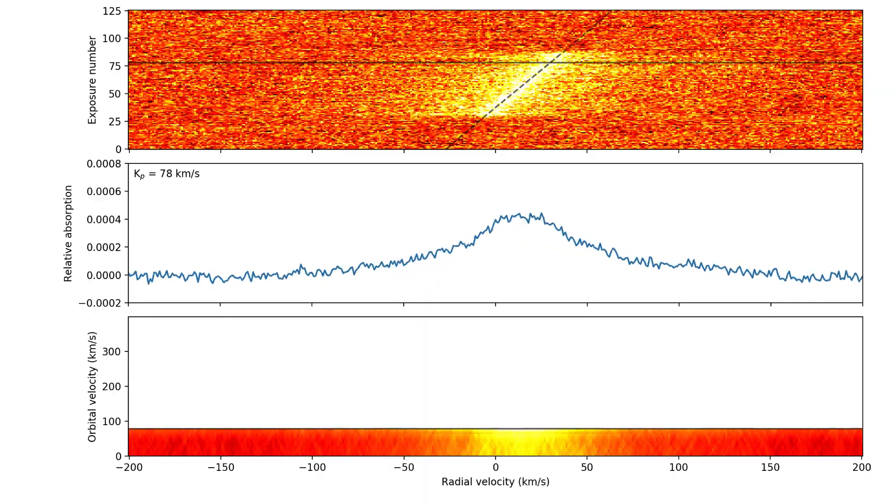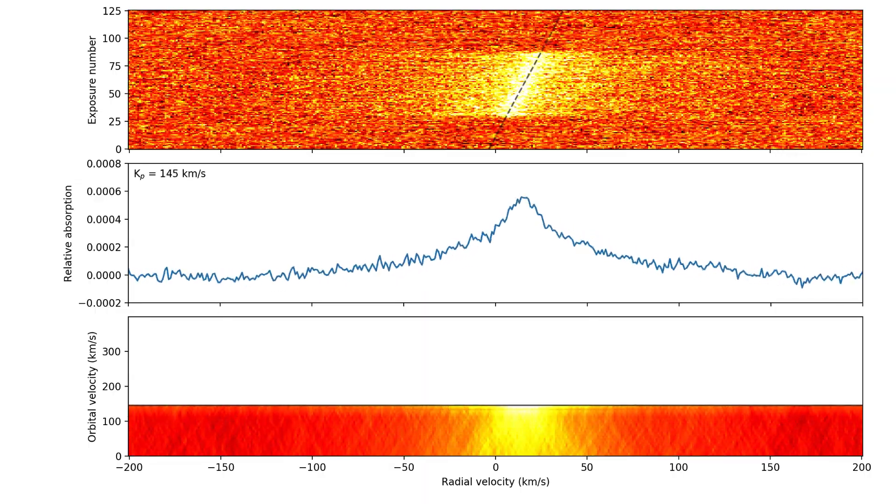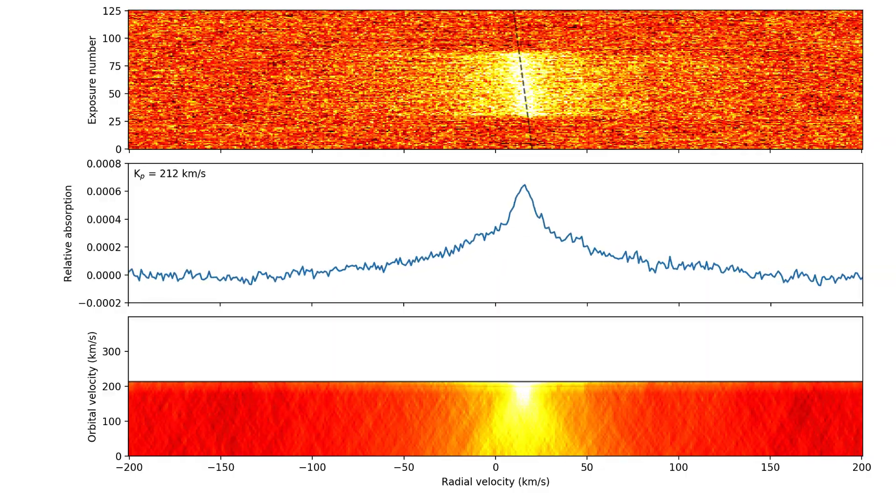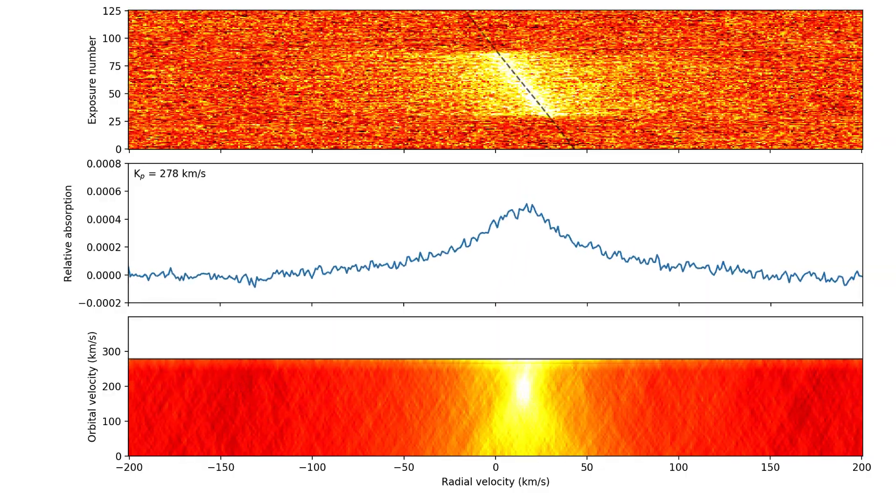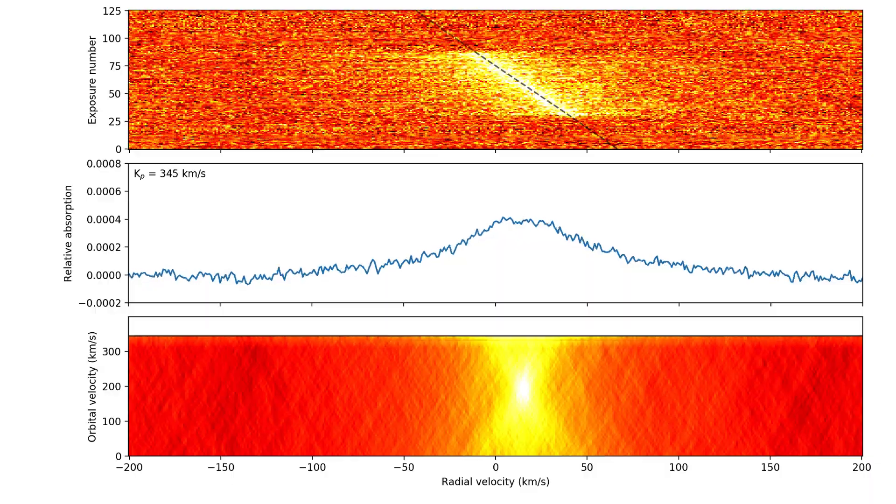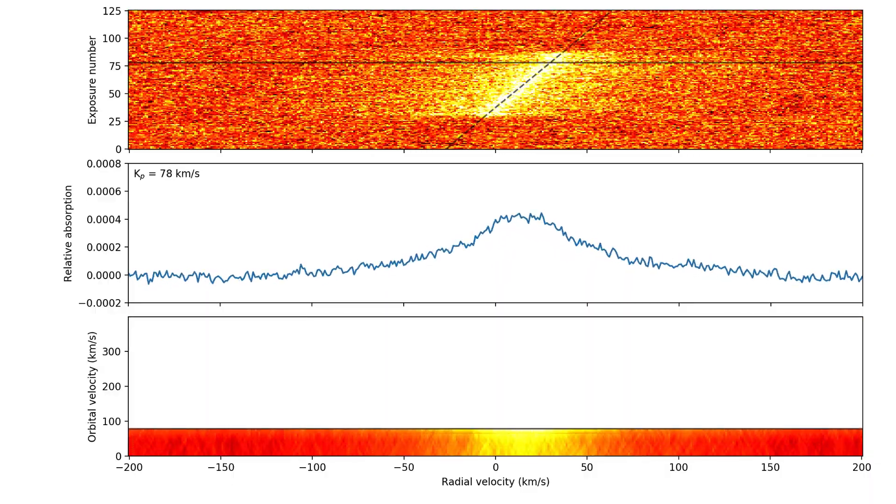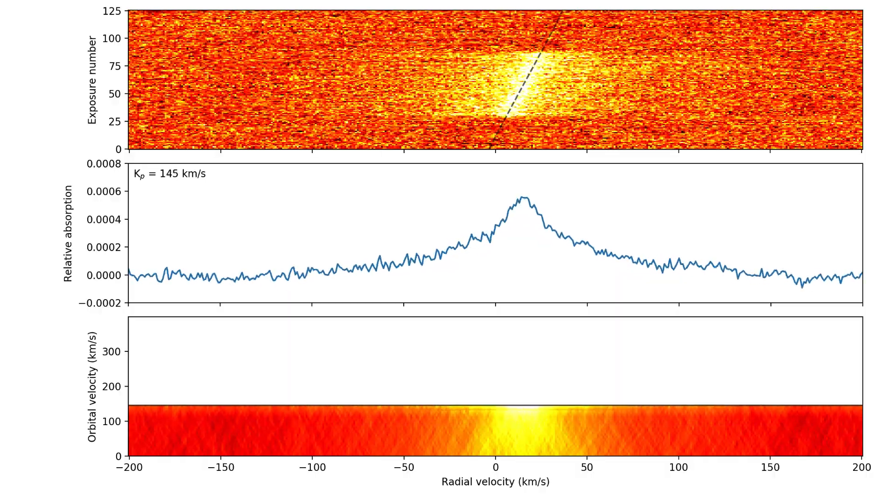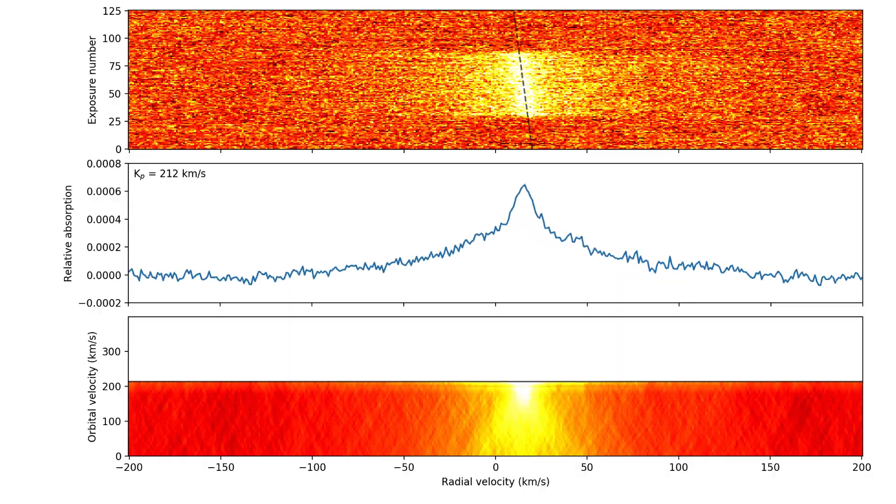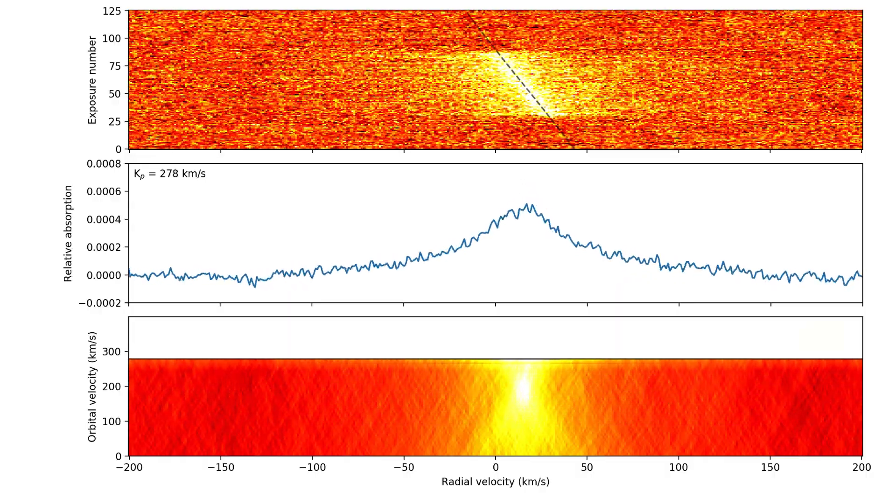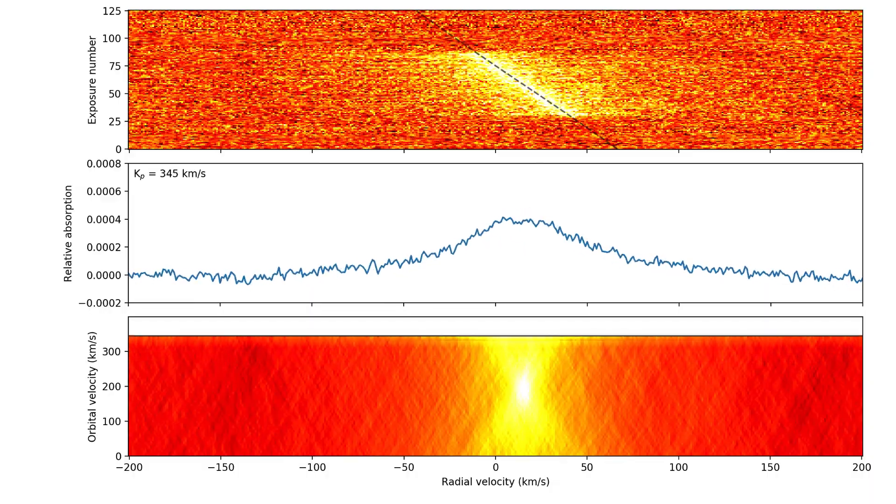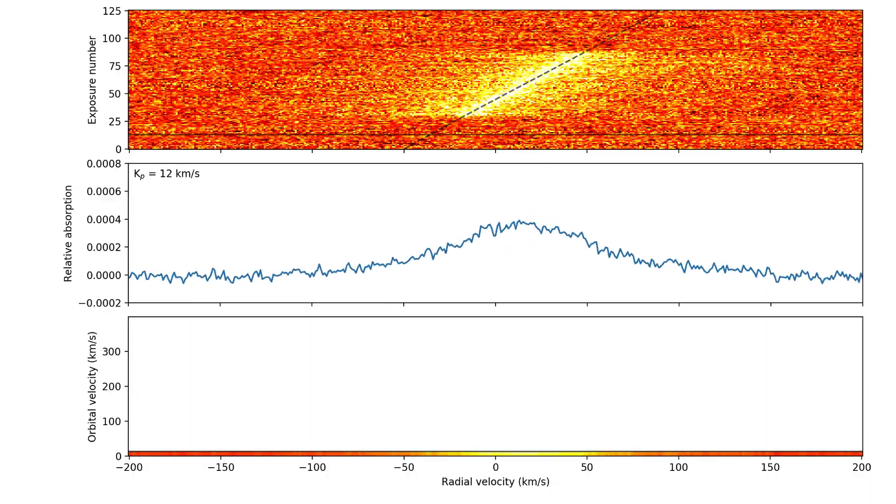We assume a sequence of possible values of the orbital velocity and shift the spectra to the corresponding rest frames. In this way, we construct a velocity-velocity diagram composed of different realizations of the one-dimensional time-averaged cross-correlation function. At the correct orbital velocity, the signal of the planet adds constructively and the time-averaged cross-correlation function maximizes.